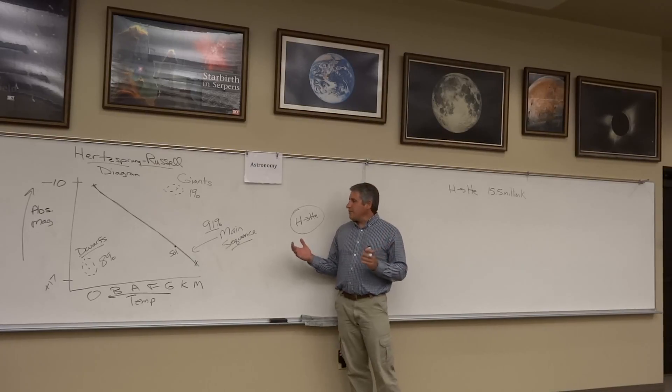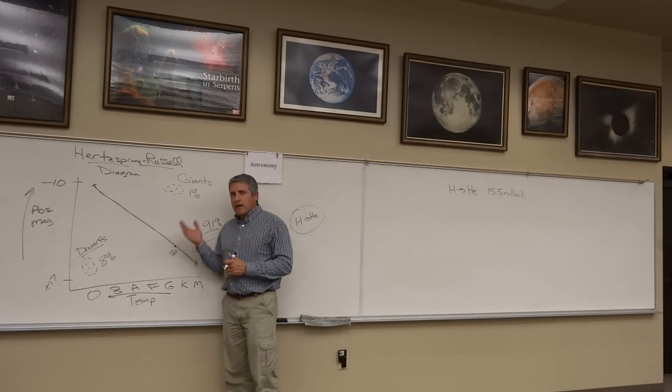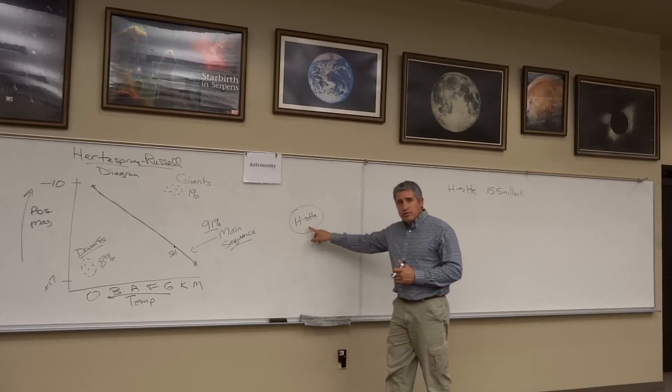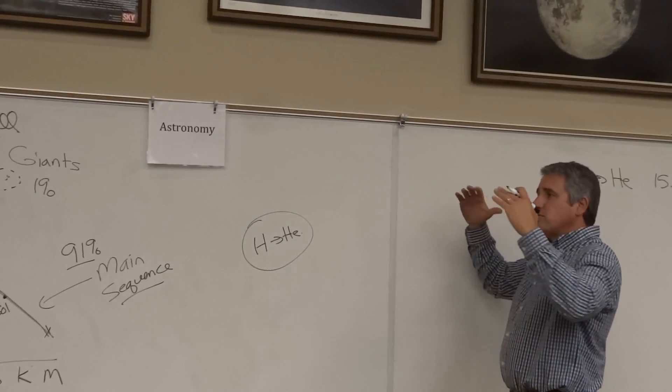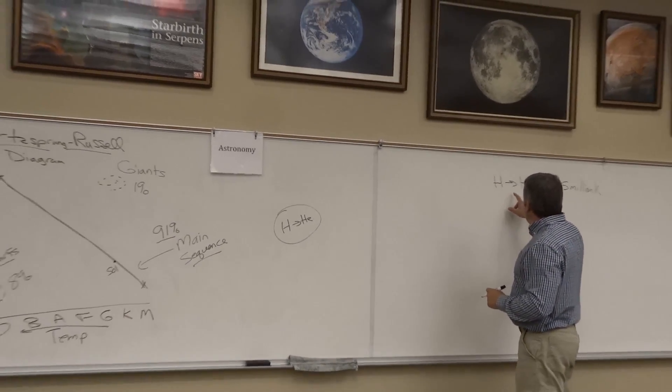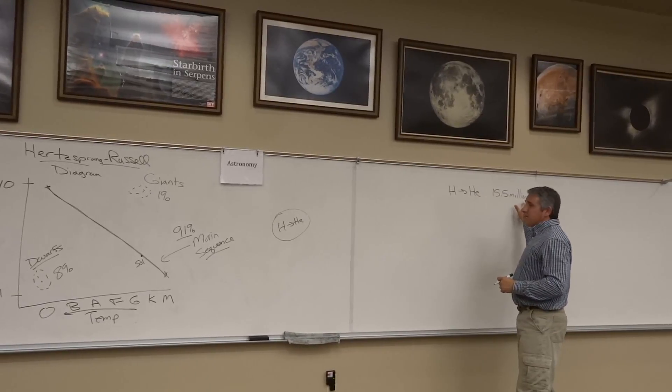Stars spend the great majority of their life, approximately 91% of their life, on the main sequence. They are burning hydrogen into helium in their cores, producing an explosive pressure that is balanced by gravity—hydrostatic equilibrium. That takes place at a temperature of 15.5 million Kelvin.